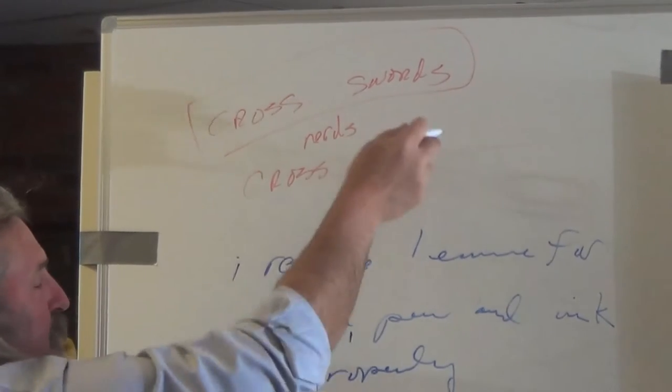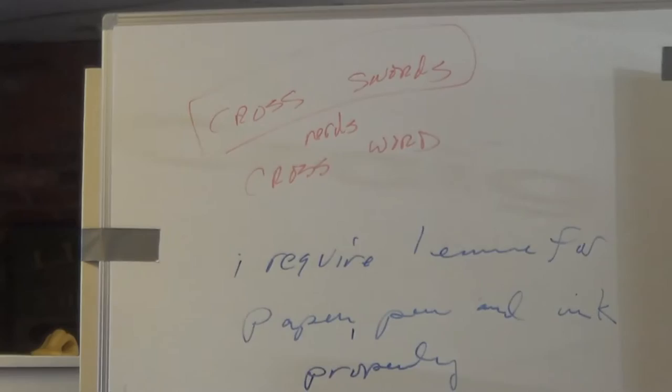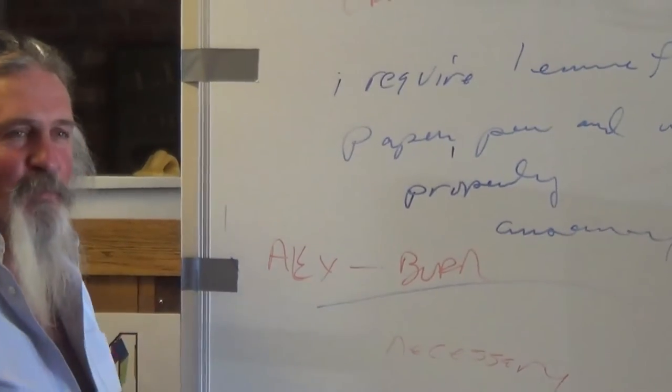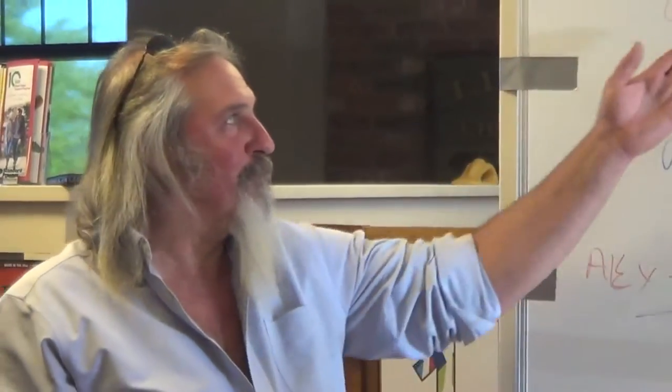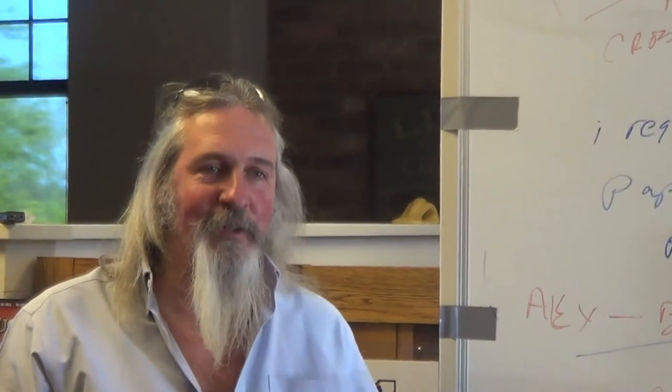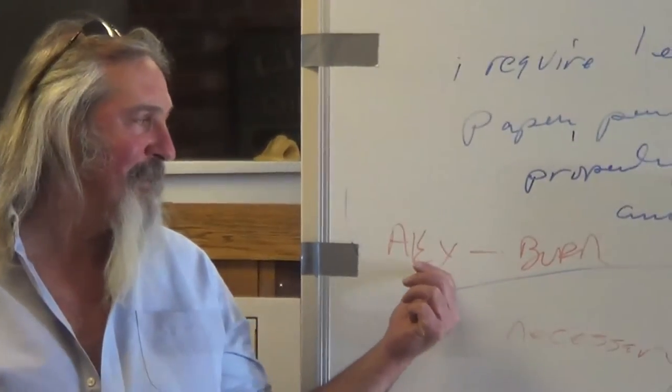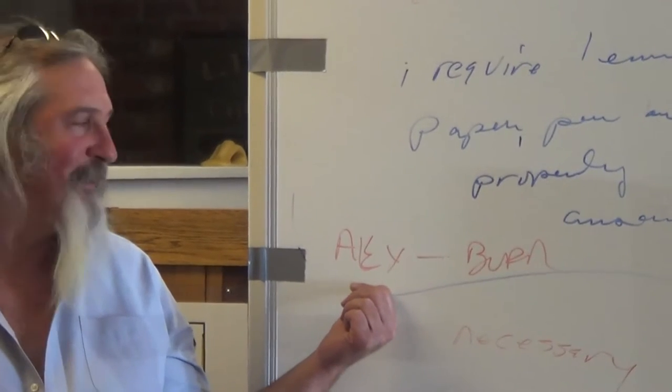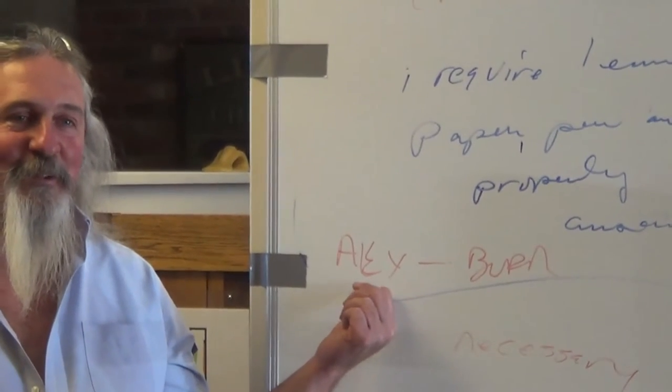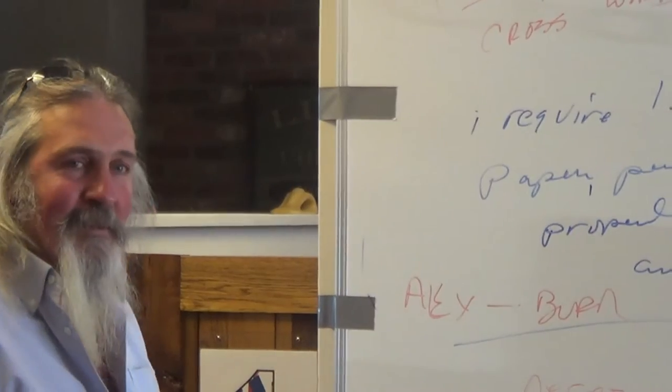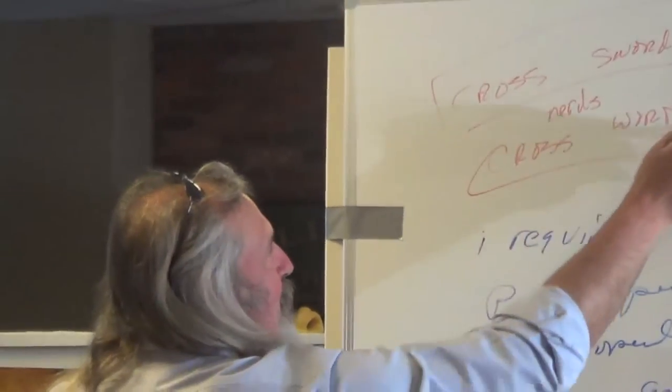How we used to settle our problems is we used to cross swords. Remember what happened to poor Alexander Hamilton and what happened to Burr? Poor vice president, poor secretary of the treasury? Somebody called somebody's wife fat, the other guy died. Now, we cross words. Now, Hamilton and Burr would have went and made a civil suit against each other, libel or slander. That's when the civil procedure of going to court really started to kick in the gear when this guy died.